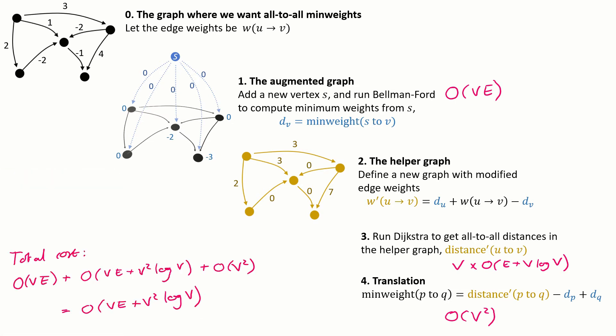And adding them all up, the first term and the third term are subsumed by the second term. In other words, the running time is essentially the running time taken up by Dijkstra. The rest is of the same order of magnitude, at least in an asymptotic sense for large V and E. Okay, that's the algorithm.